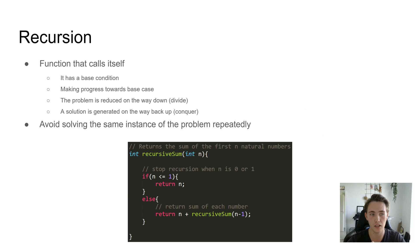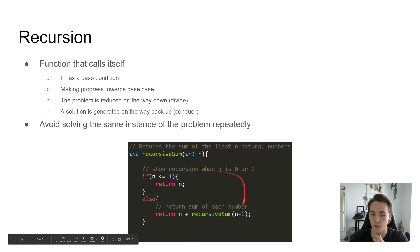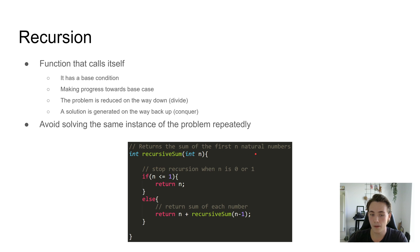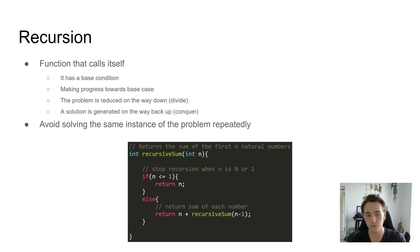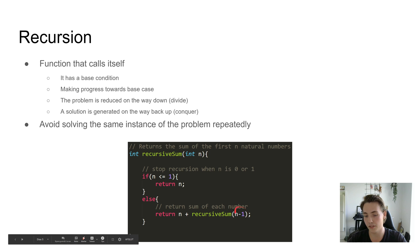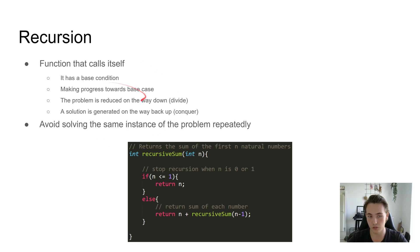The last topic here is an introduction to recursion. Recursion is when a function calls itself. When we set up a recursive function, it has a base condition — so in this example the function returns the sum of the first N natural numbers. We need a base condition so the function stops calling itself; without it the function will just run forever. We also need to make progress towards that base case, for example by decrementing N each time.